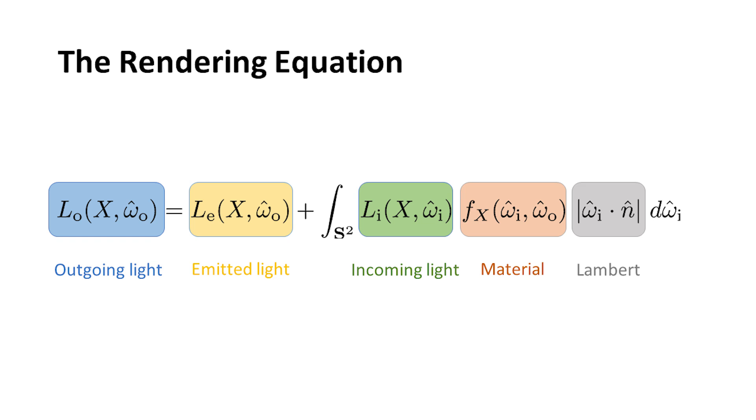The material equation is simply a function that says, given an incoming and an outgoing direction, what light goes in the outgoing direction? Like a mirror, for example, will be very reflective in one direction. And then finally, there's this Lambert term, which is this incoming direction times the normal. That's a geometric term.